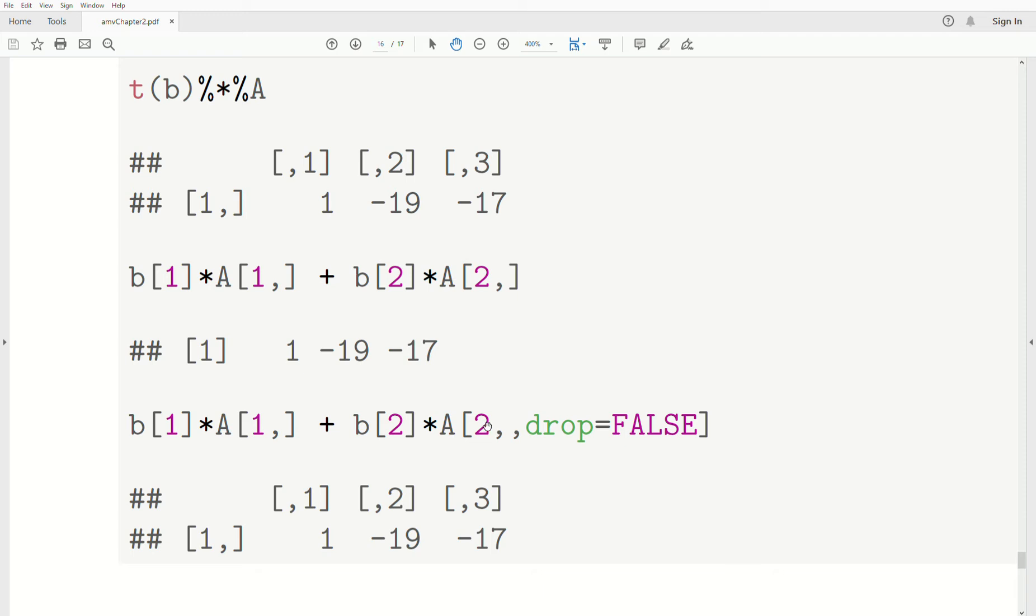Now, notice the first one is rows, the second one is columns, and it's blank. We want all the columns of the second row. And then what's after that are options of this, of the matrix functions here.